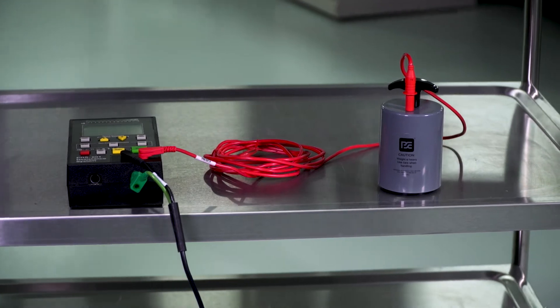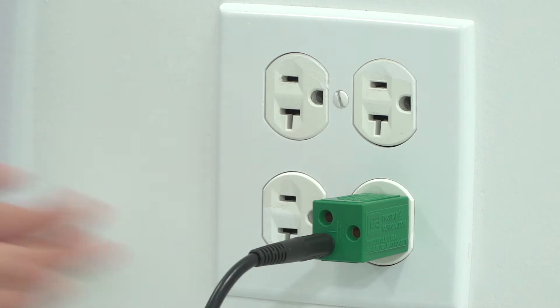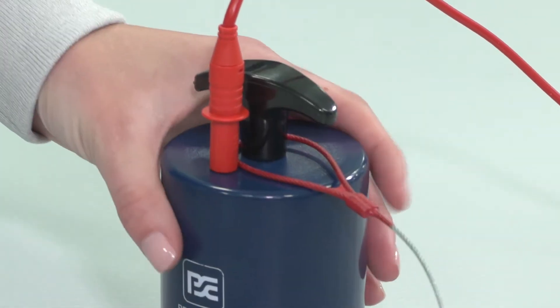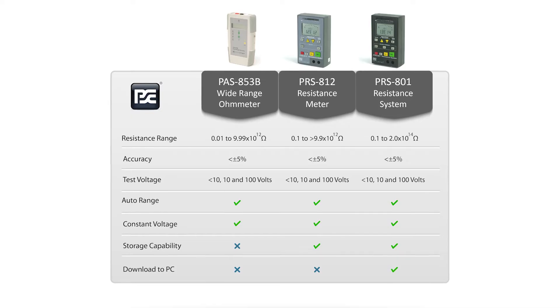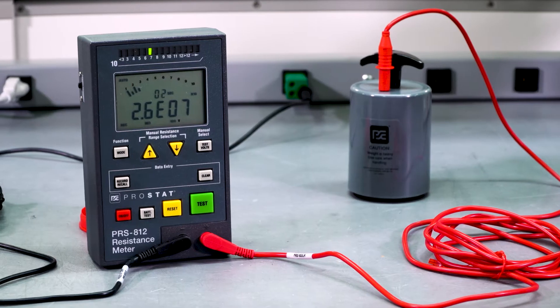All PROSTAT resistance instruments are battery-operated, provide constant test voltages at 10 and 100 volts, and have the widest range in their class. They all measure from less than 1 ohm up to 2.0 times 10 to the 14th ohms.